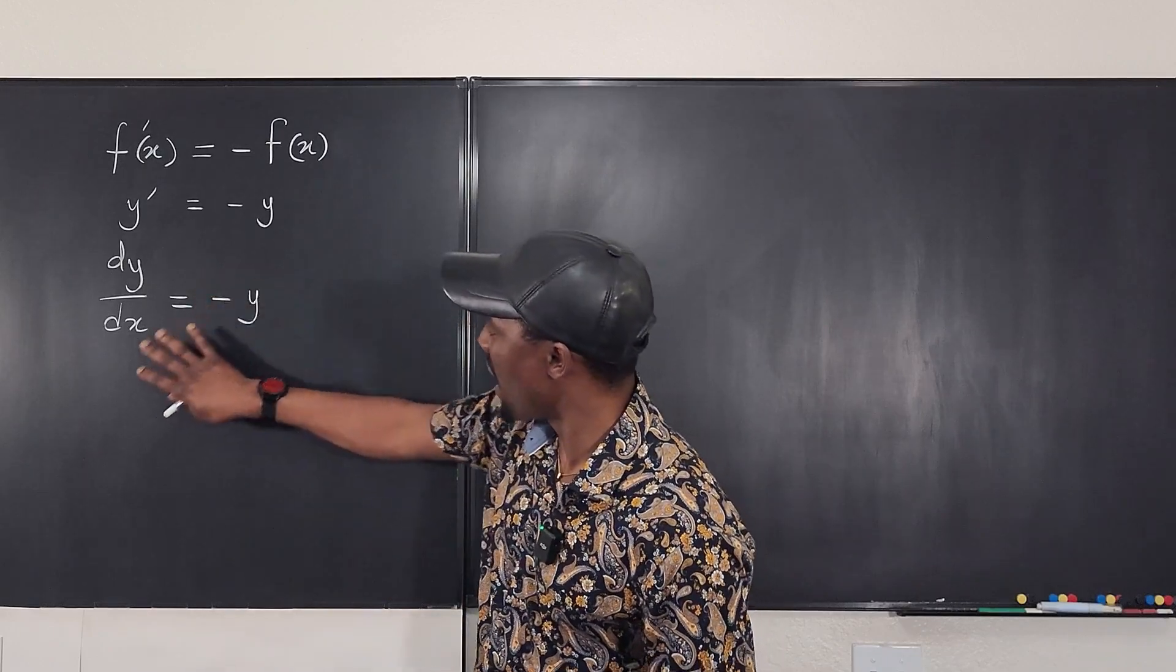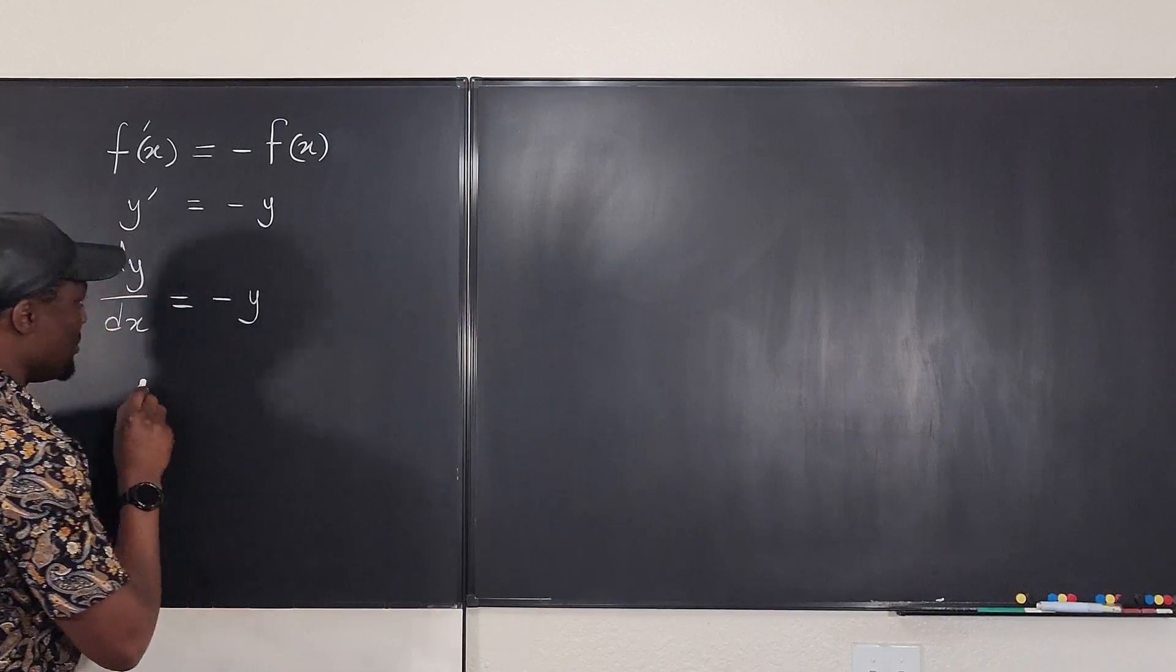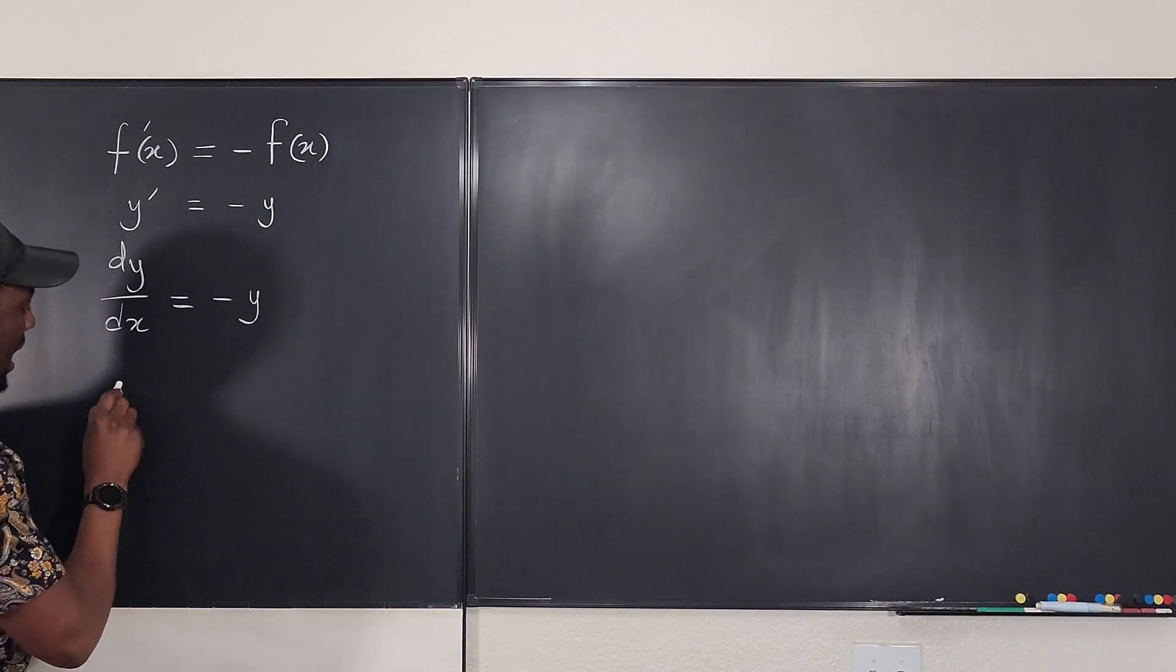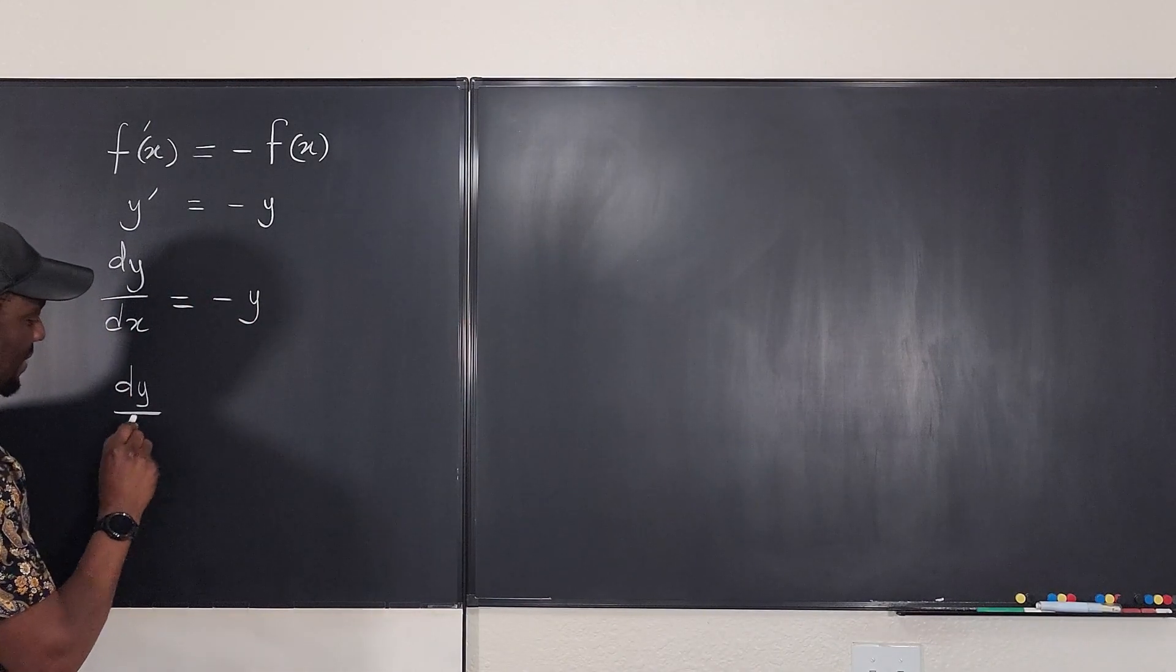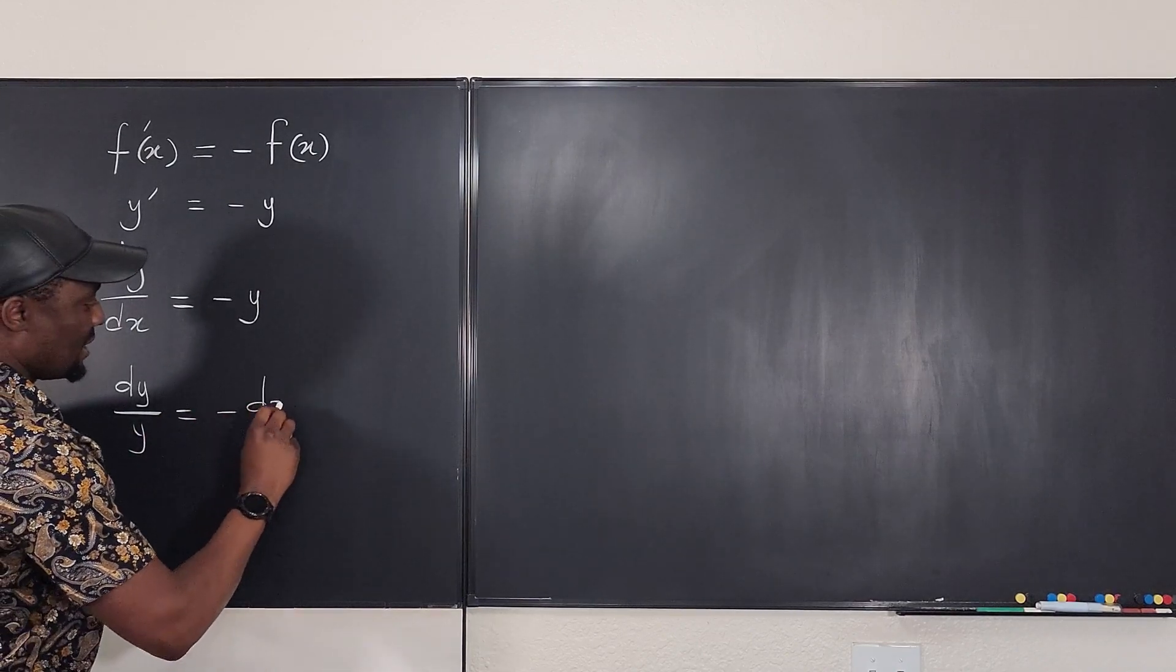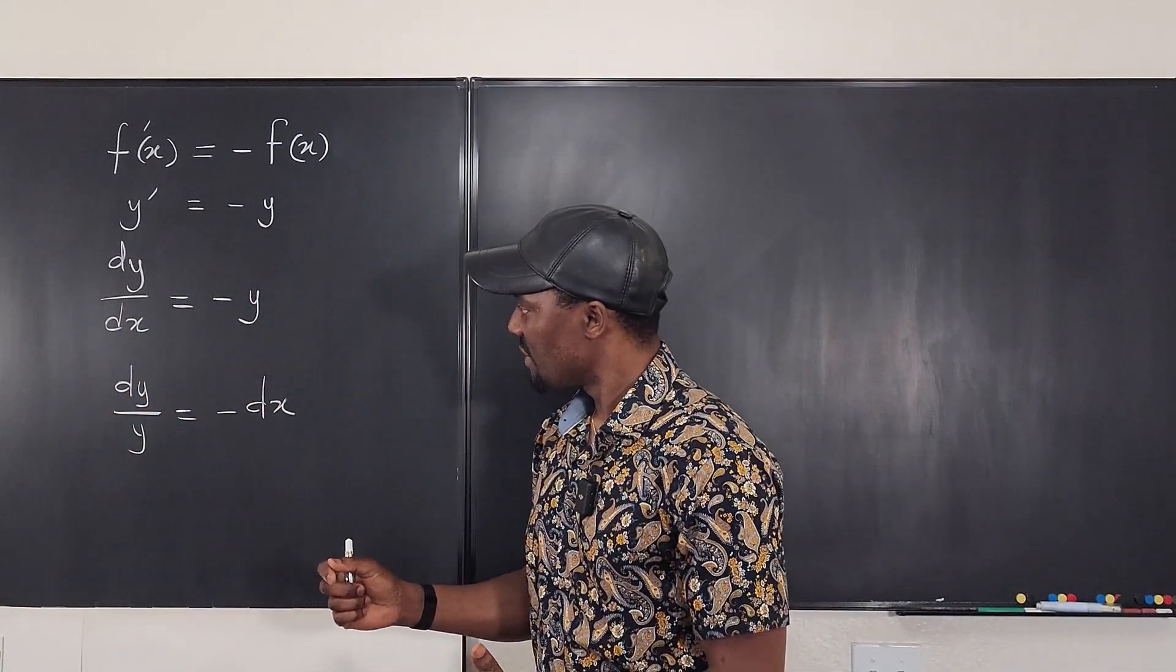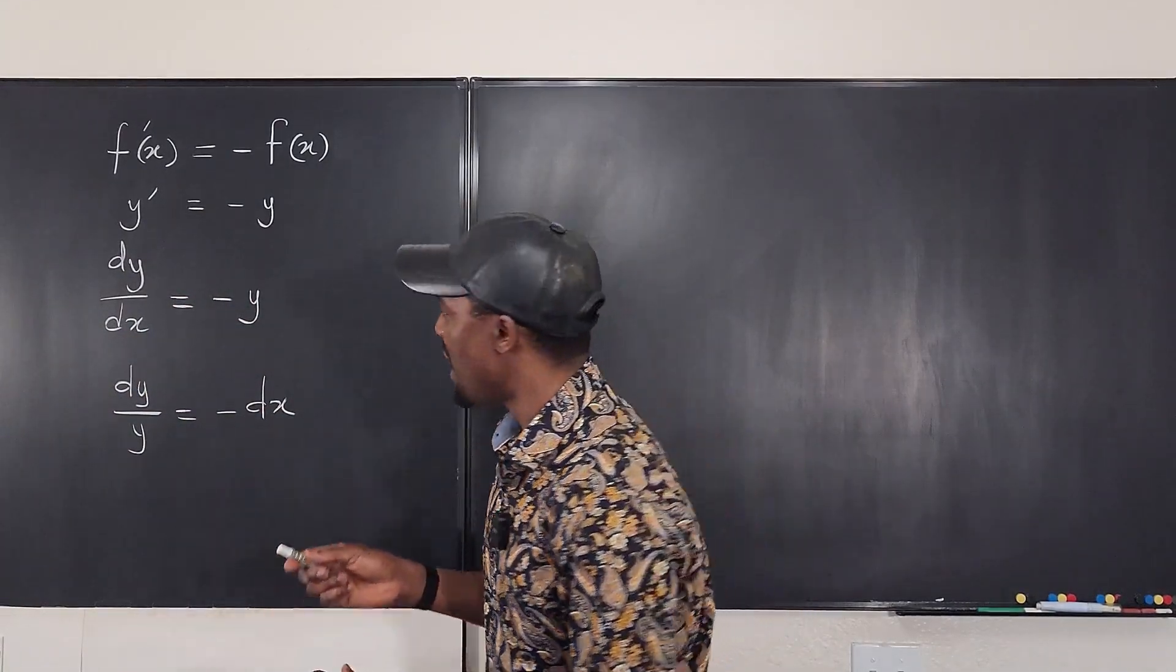So, if I decide to take this y down here and bring this x over here, what I'm going to have is, I divide both sides by y, I'm going to have dy divided by y will be equal to negative dx. You see, this negative dx, I can actually rewrite this so it looks nicer.